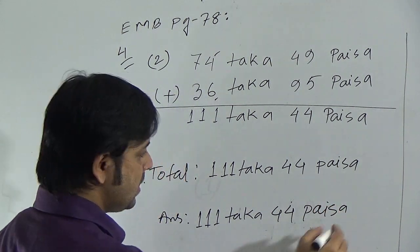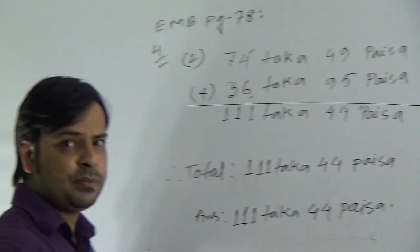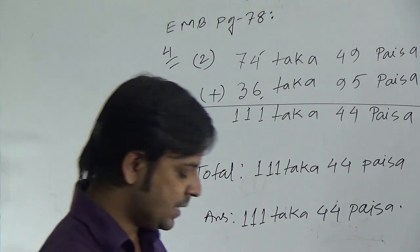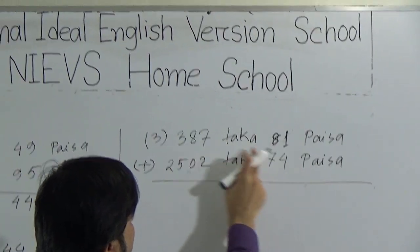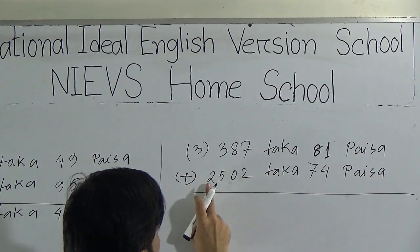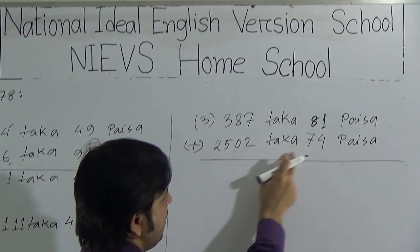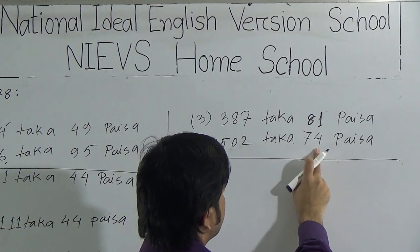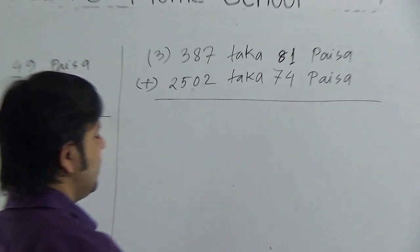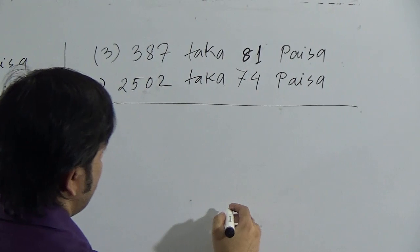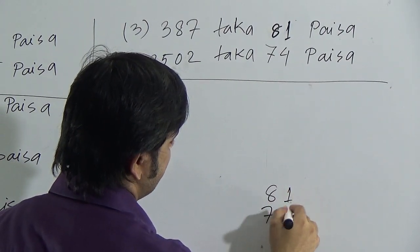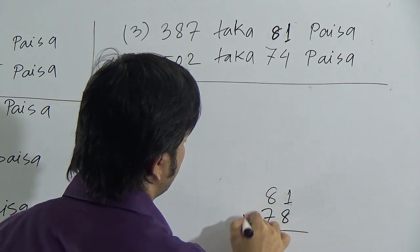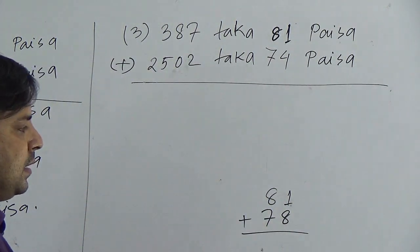So students, this is a very simple question. Then go to the next addition. Question 3: 387 taka 81 paisa. We have to add 2502 taka 74 paisa with the previous one. If we add, we have to add paisa with paisa at first. Then we have to go to taka.